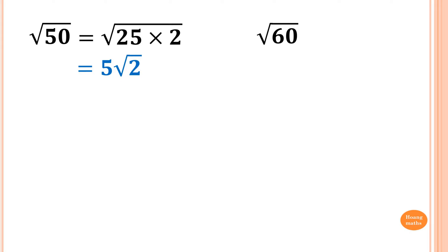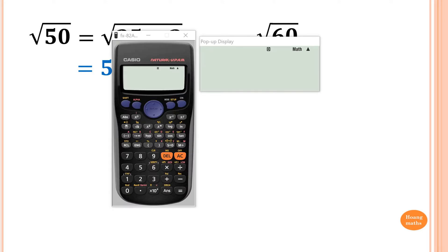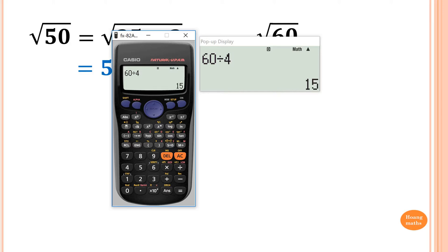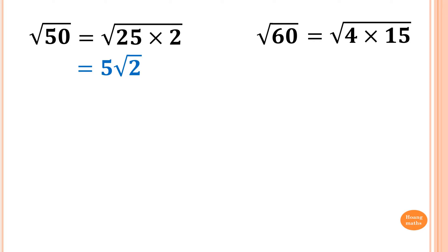Next one: √60. Now what square number is in there? If you're not sure, I'll show you how to use the calculator. So 60 is an even number, so divide by 2, that gives me 30 — so another 2 there. 2 times 2 is 4, so 60 divided by 4 is 15. So 4 times 15. Square root 4 is 2, so your answer is 2√15. But if you know your square numbers, you can write straight away: 60 is 4 times 15, square root 4 is 2, so 2√15. Simple.